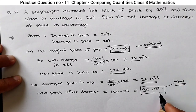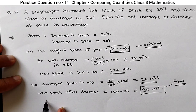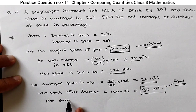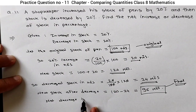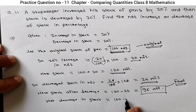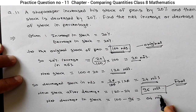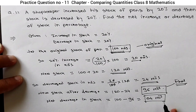So net there is a decrease. Let's calculate it. The net decrease in stock equals original stock 100 minus final stock 96, which is 4 numbers. So net decrease in numbers is 4.